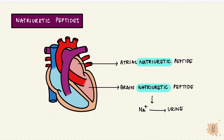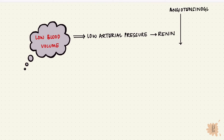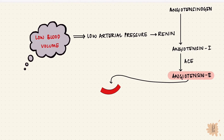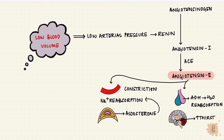Now let's apply the renin-angiotensin-aldosterone system. When there's low blood volume, low arterial pressure stimulates renin. Angiotensinogen gets converted to angiotensin-1, then by the angiotensin-converting enzyme to angiotensin-2. It constricts vessels, increasing blood pressure; reabsorbs sodium directly and indirectly through aldosterone; stimulates ADH to reabsorb water; and increases thirst, causing water retention. All of this together brings blood pressure back up.